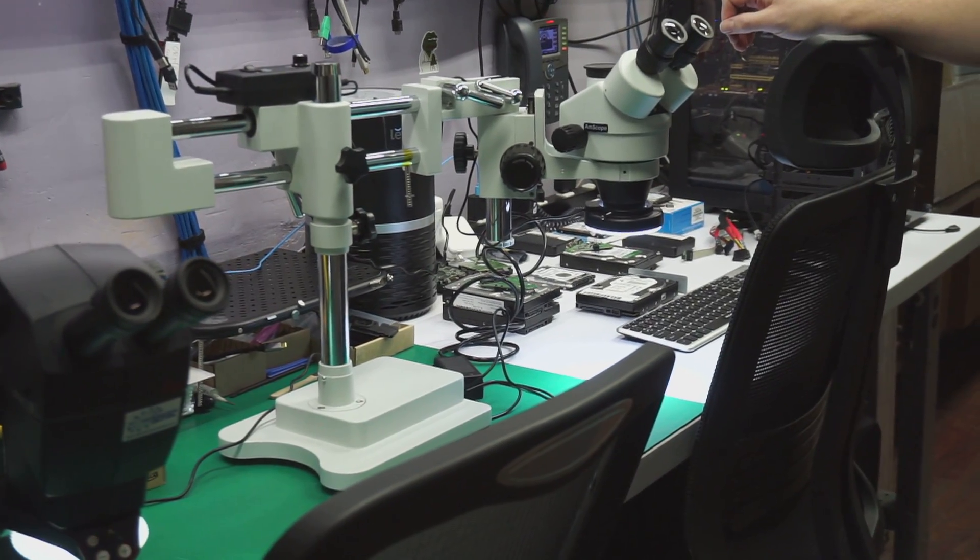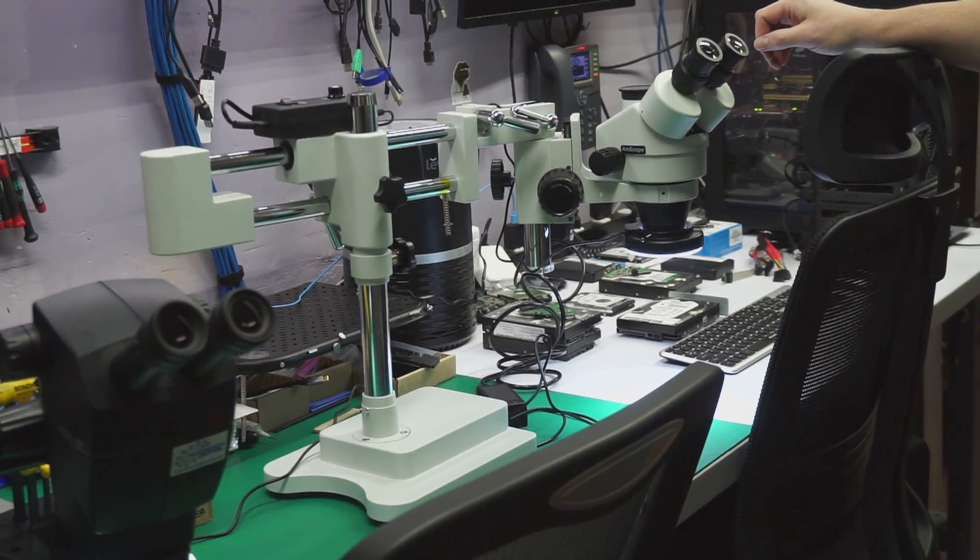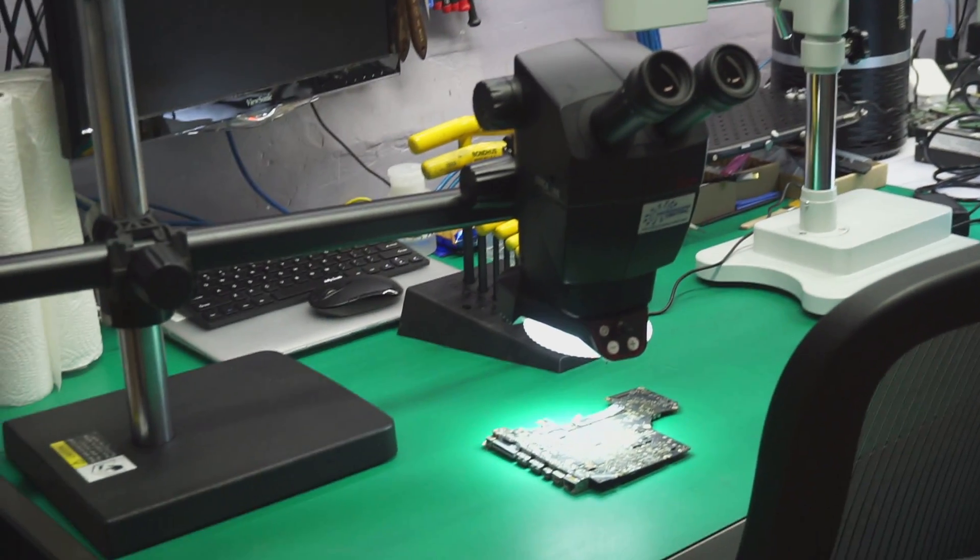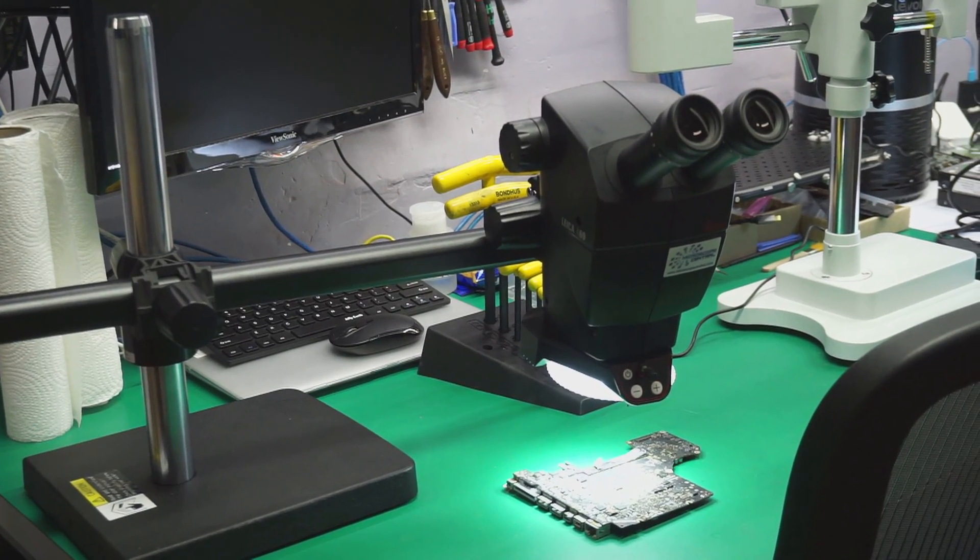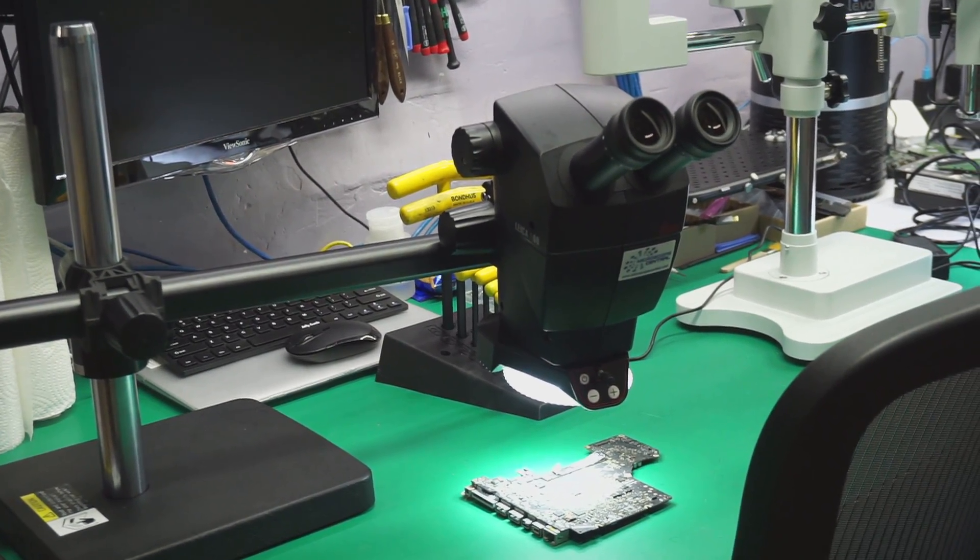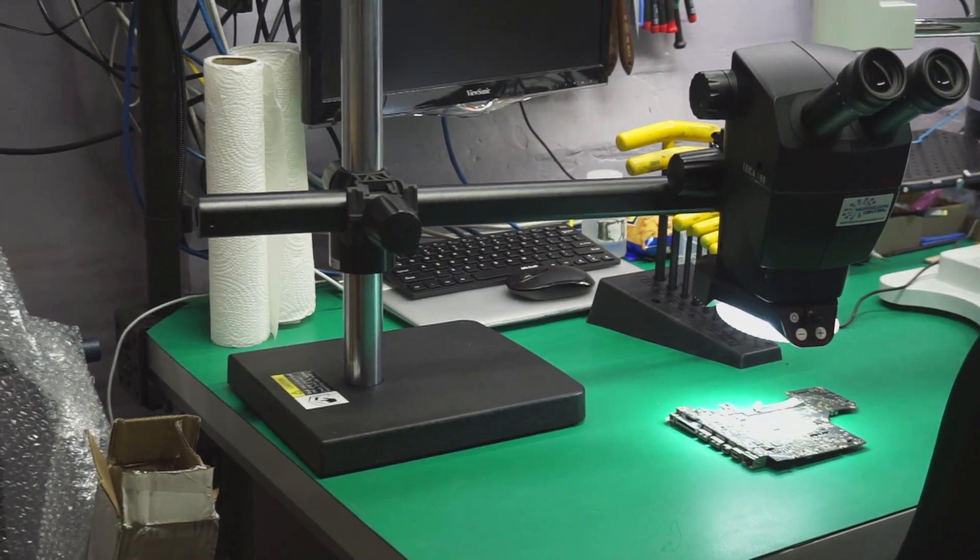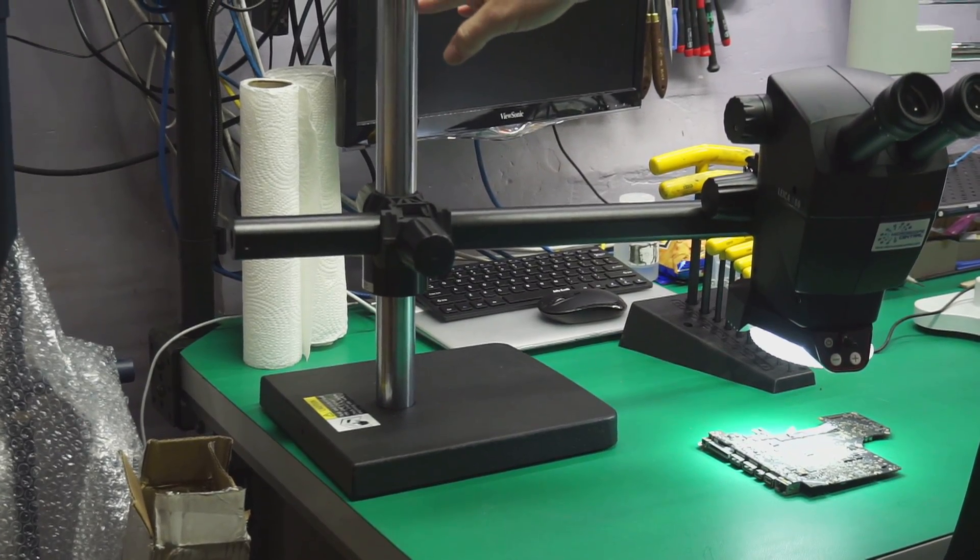Yeah, so the one on the right, typically depending on sales, coupons, how you configure it, somewhere between $500 and $700. And this one on the left, the Leica, is about $1,600 or so? $1,600 with the boom arm stand that we're showing here, that we have with it.